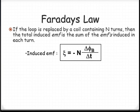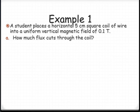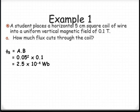Now let's have a look at an example using Faraday's Law. So we've got a horizontal 5 cm squared coil, and it's in uniform vertical magnetic fields, so they are perpendicular to one another. Firstly, how much flux cuts through the coil. So flux is area times magnetic field. So we substitute in, careful of units, square, so we need the area 0.05 m squared. Multiply that by 0.1 teslas. We get 2.5 times 10 to the negative 4 webers.